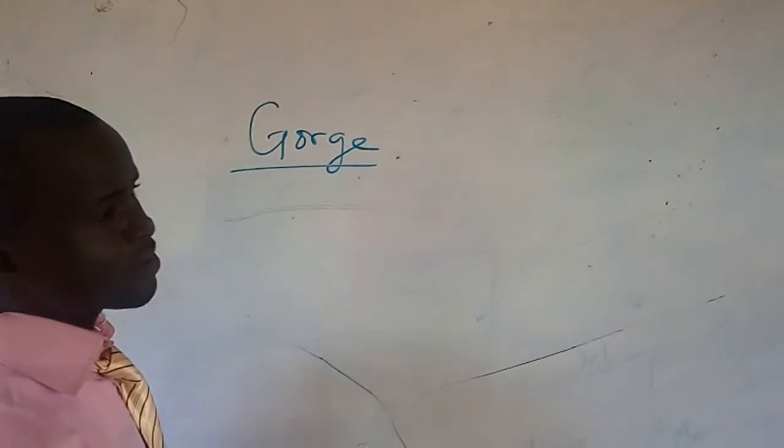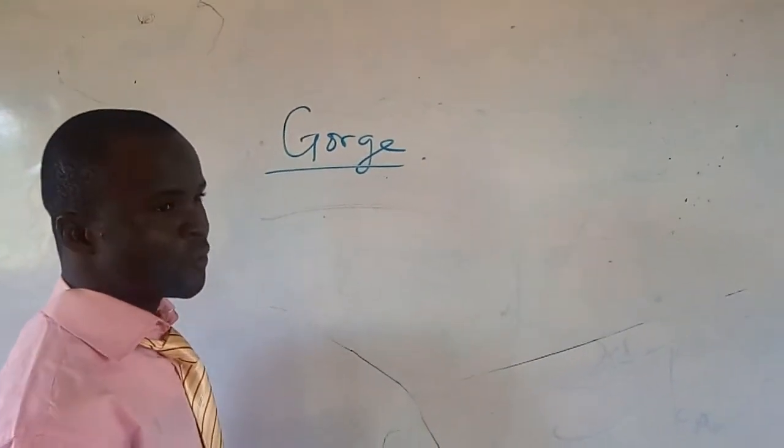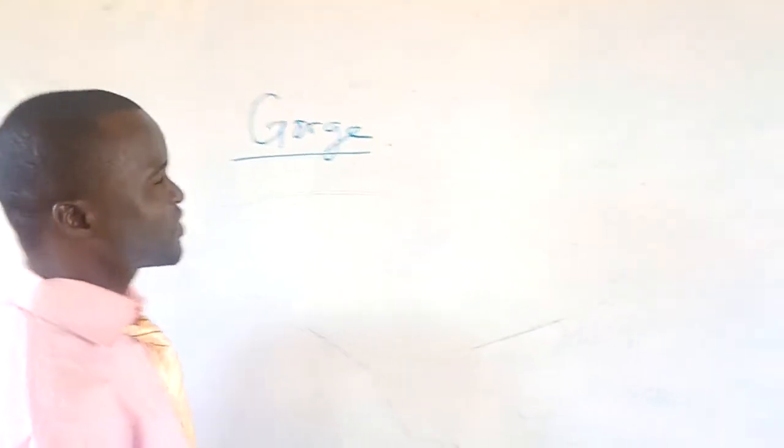What is gorge? A gorge is a steep-sided valley with rivers or streams.